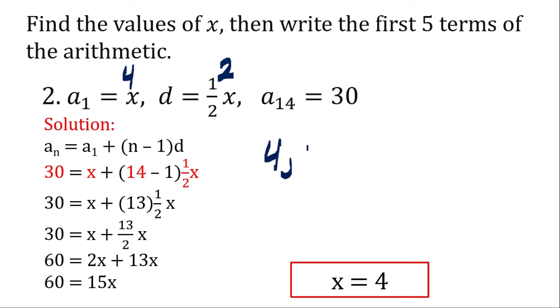So let's write the first 5 terms. So that would be 4 plus 2, that would be 6 plus 2, 8, 10, and 12. So these are the first 5 terms.